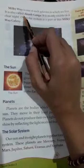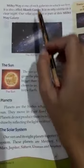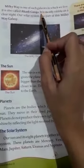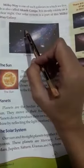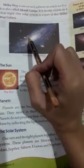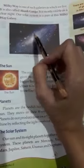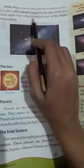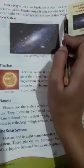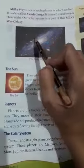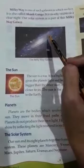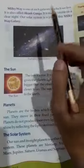It is also called Akas Ganga. Ise hi Akas Ganga bhi kaha jata hai. It is mostly visible on a clear night. Yeh zyaadatar raat ko hi dikhti hai. Our solar system is a part of this Milky Way galaxy. Hamari saur pranali is Milky Way Akas Ganga ka ek hissa hai.